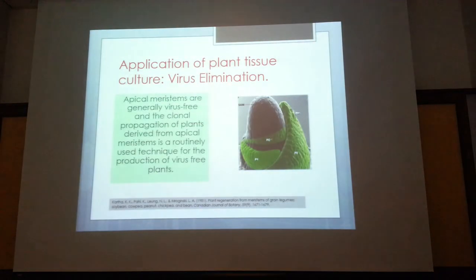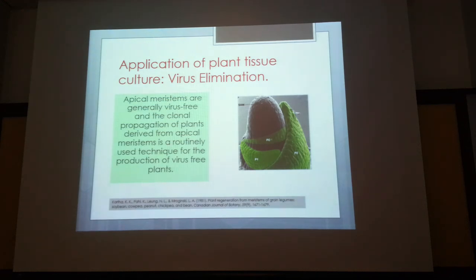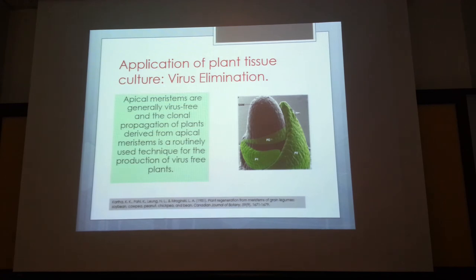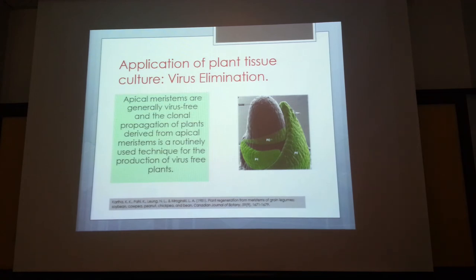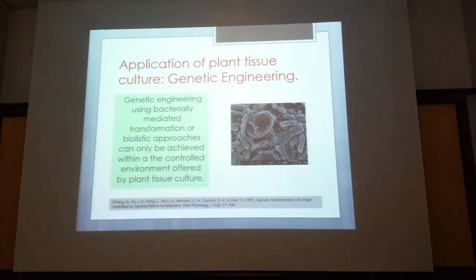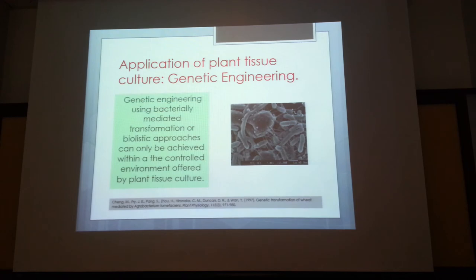Virus elimination is another application. Some potato varieties may be infected with virus; you can eliminate the virus by growing the apical meristem in a culture system, then dissecting out the virus-free part to establish it in culture. Commercial companies now go for true potato seeds — establishing the potato plant in vitro to produce seeds — so there's no need for the old method of propagation, which also propagates the virus.